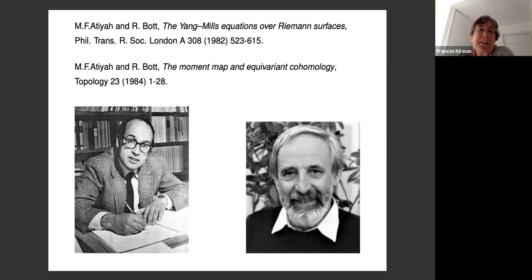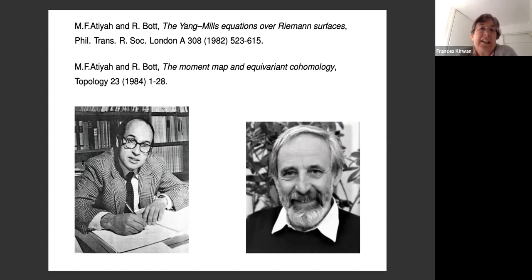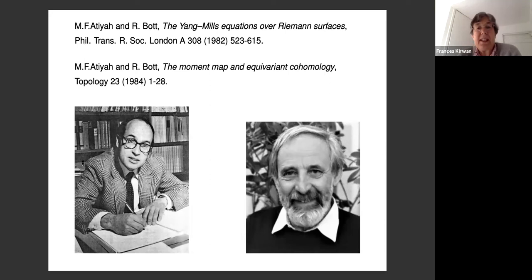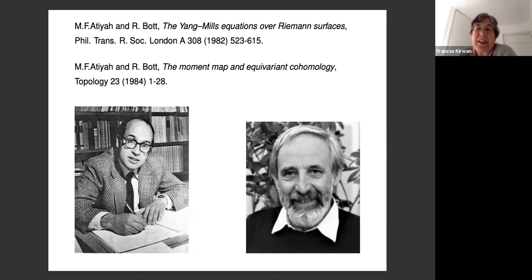This paper brings together a huge range of different parts of mathematics: algebraic topology, Morse theory, algebraic geometry, number theory, gauge theory, analysis, and in particular symplectic geometry and Kähler geometry. Some of those ingredients are very closely related to the subject matter of the other paper I want to talk about, which is 'The Moment Map and Equivariant Cohomology.' Although this second paper was published later than the Yang-Mills paper, I want to talk first about its ingredients because they are important inputs into the Yang-Mills paper.